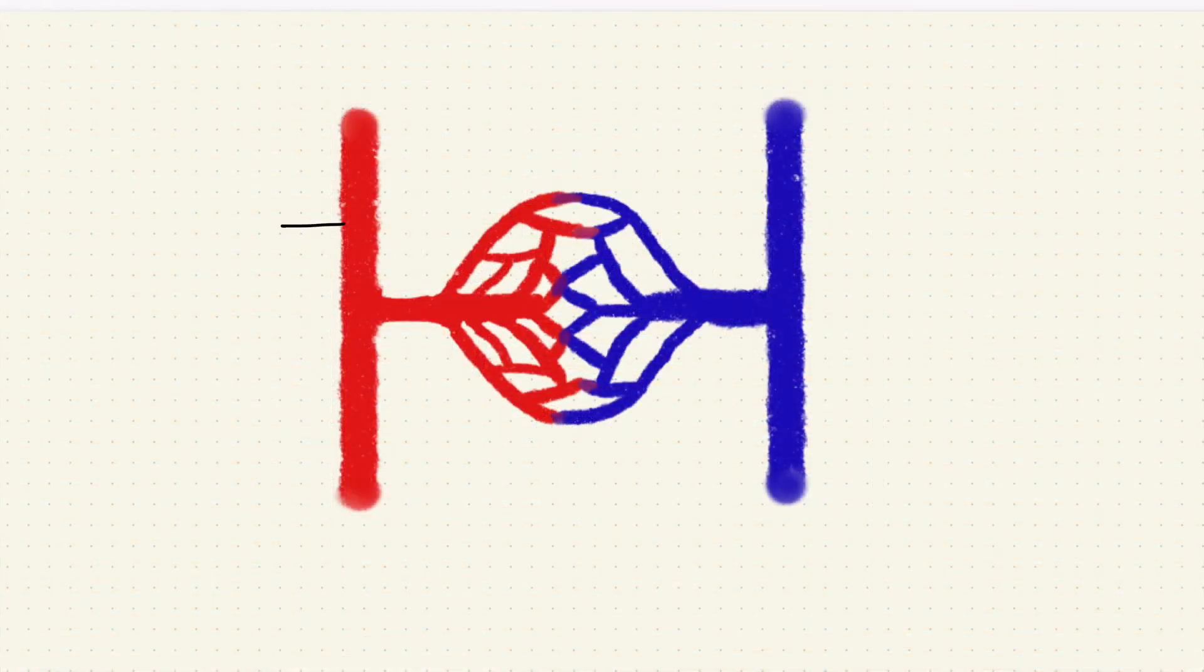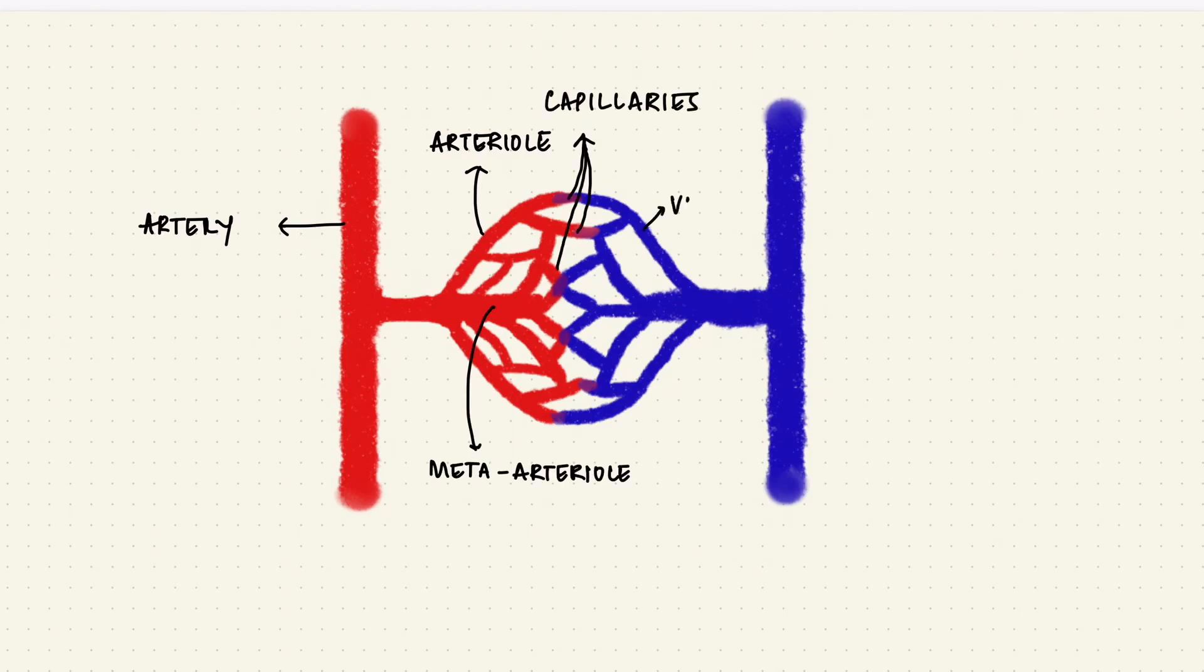Each organ in the body is supplied by an artery. The artery divides a bunch of times to form arterioles. The arterioles then branch to form meta-arterioles and capillaries, which then drain into venules and then veins.